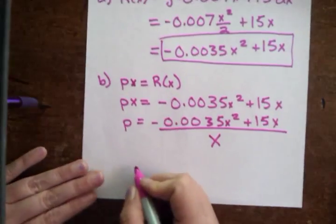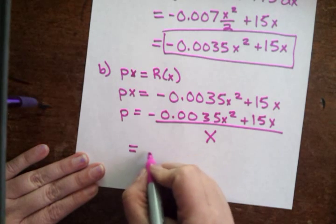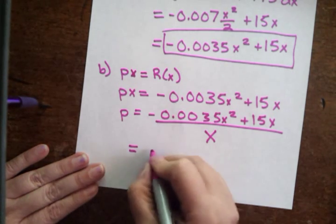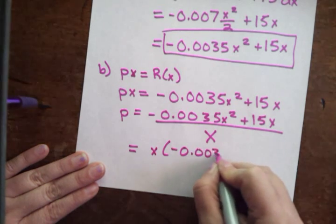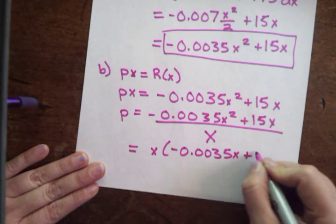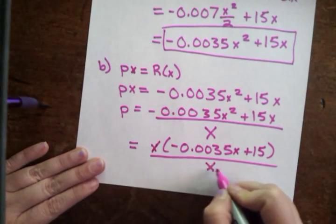Well, with a little bit of simplification, you can see that basically these x's are going to go away. This would be the same as x times negative 0.0035x plus 15 over x. The x's will cancel.